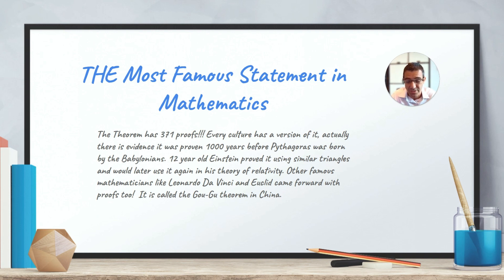Mr. Einstein himself used it and proved it when he was 12 years old with a beautiful proof as well using similar triangles. Leonardo da Vinci proved it. Euclid proved it. Everybody proved it. Of course, it's credited to Mr. Pythagoras. And it's called the Gu Gu theorem in China. The Gu Gu theorem. I hope I'm saying this right.